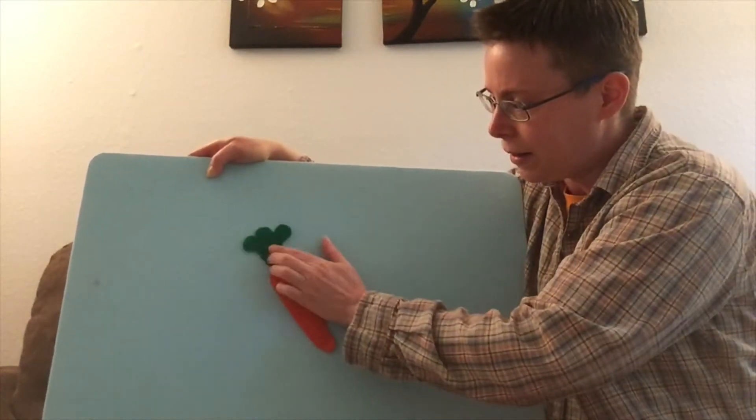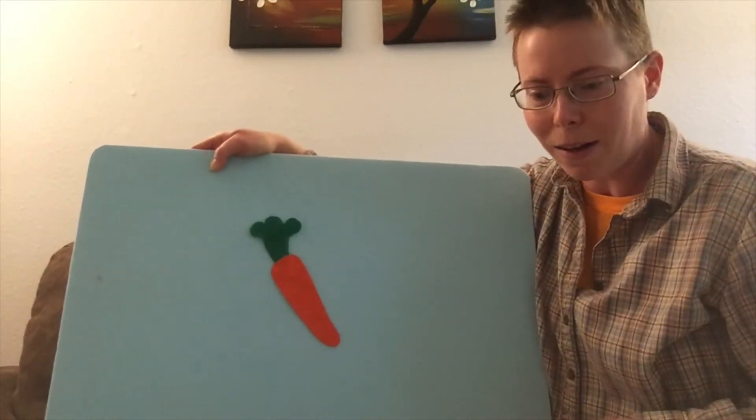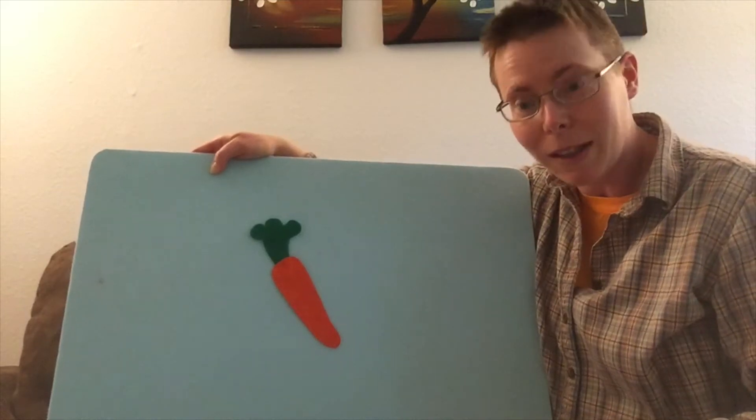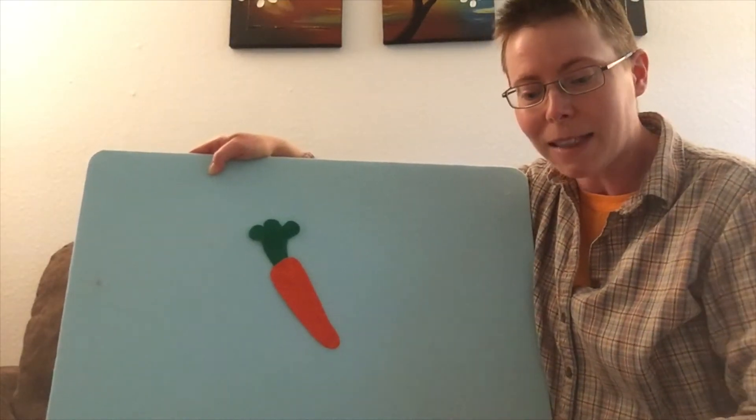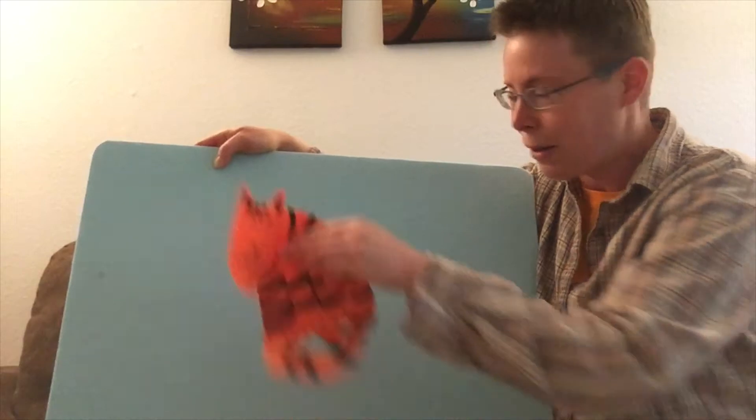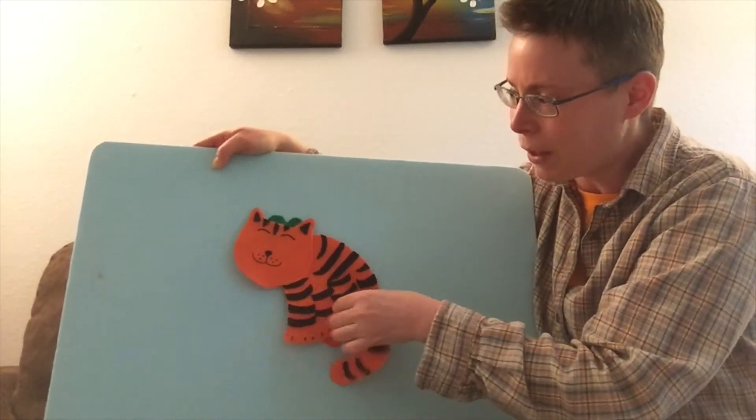He spied a carrot on the floor. He pounced on it and played some more as he played this little game. Orange is what he became.